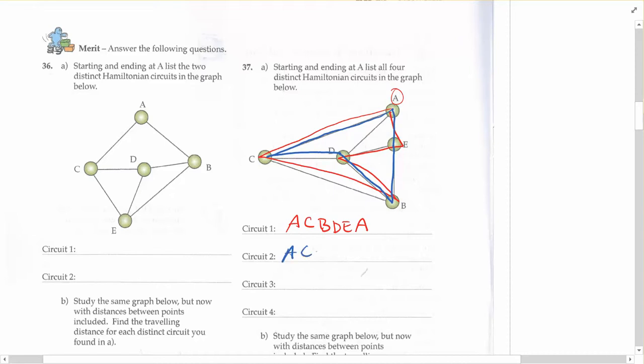So A, C, to D first, then B, E, A as one possibility.